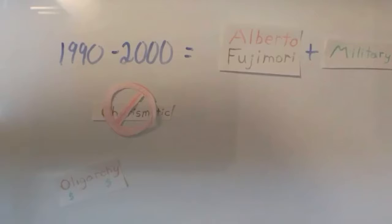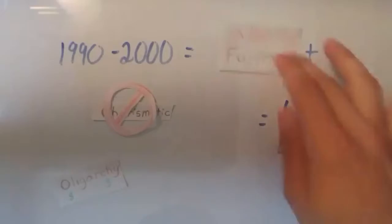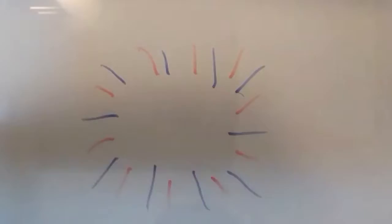Fujimori promised economic changes, which ultimately led to Peru's renegotiating its international debt and returning to the good graces within the international financial community. By 1995, Fujimori was credited with Peru's successful economic recovery, and in turn, was re-elected.